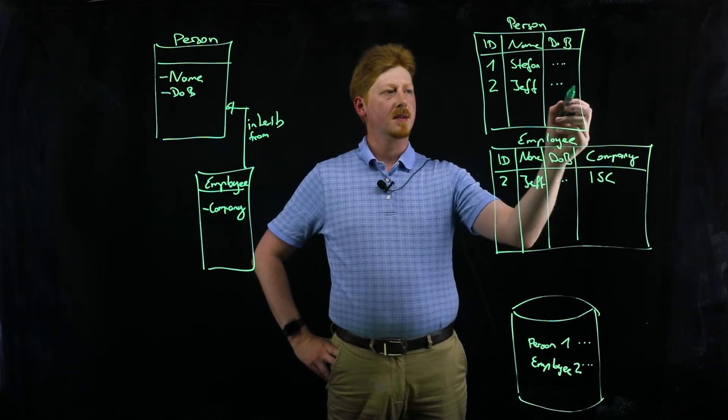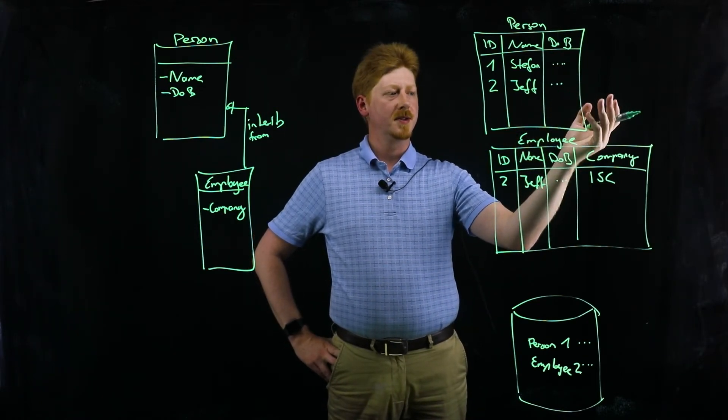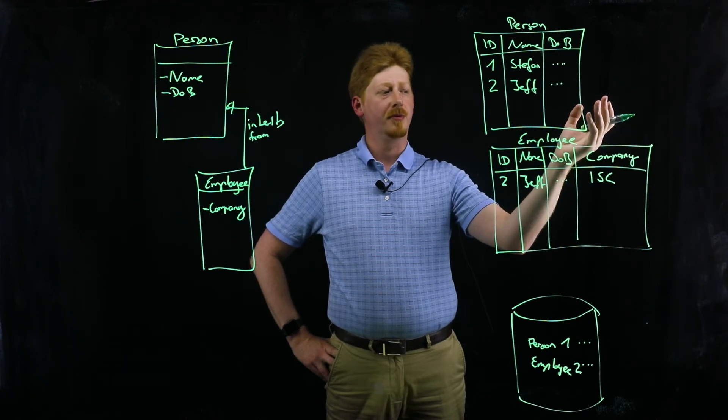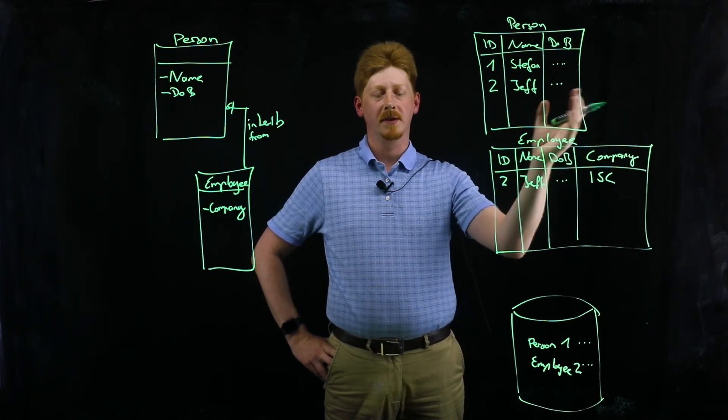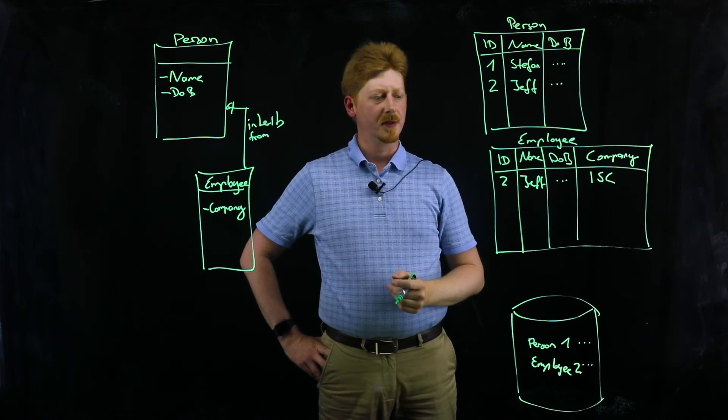But in this view, you don't see a value for the company because the person table doesn't include this in the view.